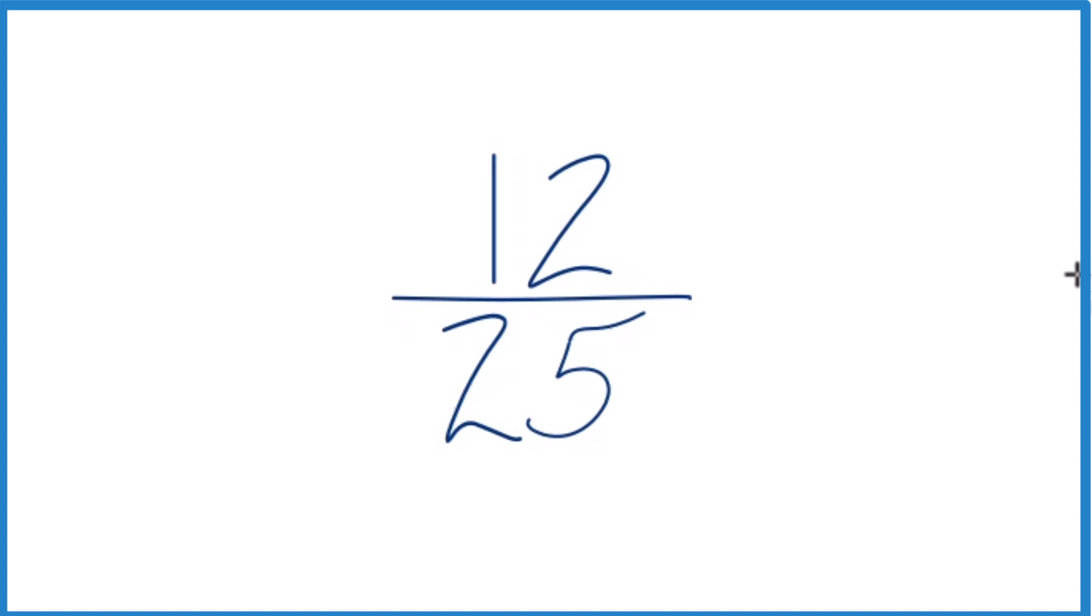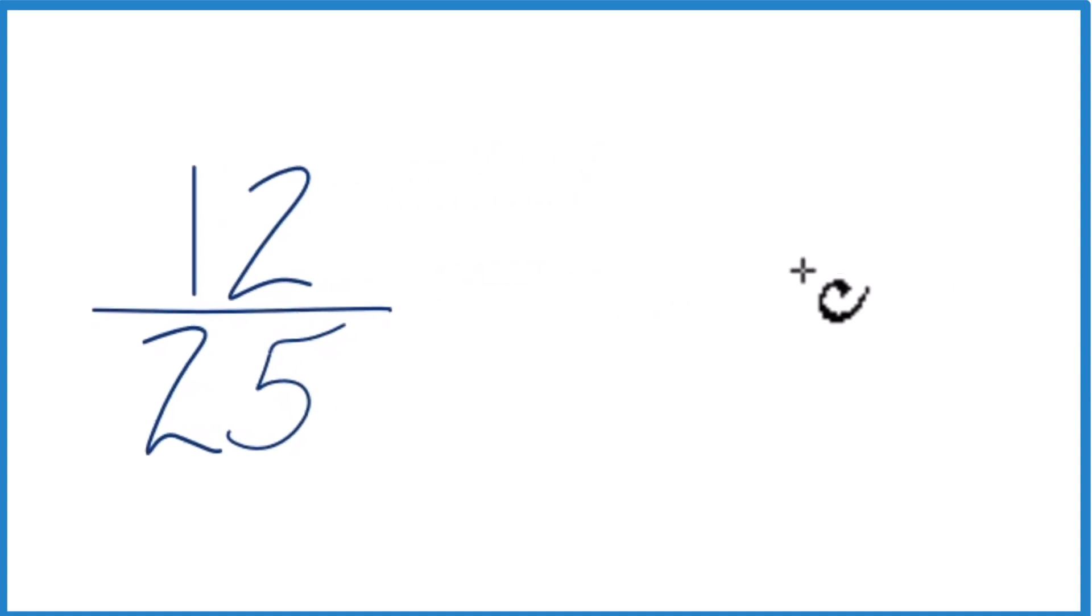So we want to know 12 divided by 25. So 12, and how many times does 25 go into 12? Doesn't go into 12, but we could call this 120 if we put a zero and a decimal point up here.